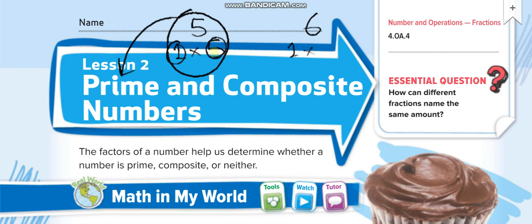Any number that has more than one factor pair — like one times six and two times three for the number six — is known as a composite number. Six has four factors: one, two, three, and six. Any number with more than one factor pair or more than two factors is composite. Remember, this one is known as a factor and together they are a factor pair.